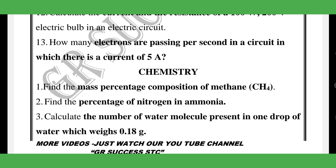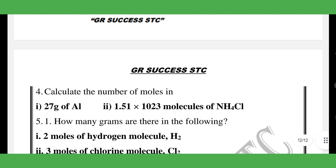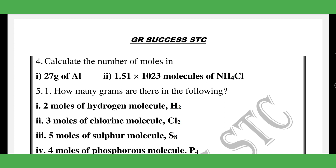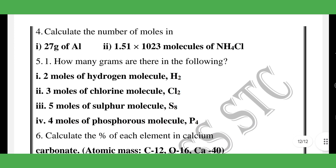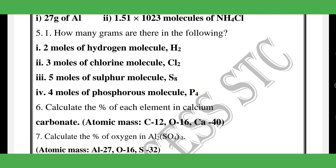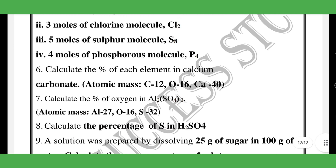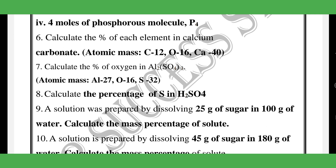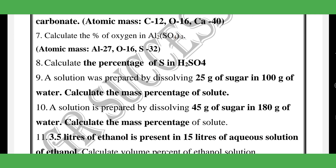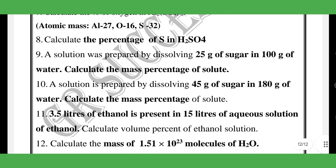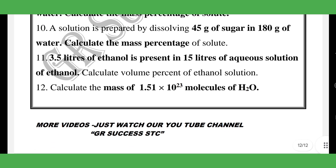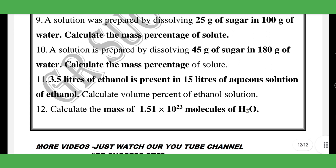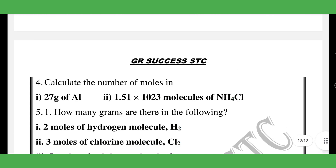Chemistry numericals: mass percentage, moles of ammonium compounds. How many grams are: 2 moles of hydrogen molecule H₂, 3 moles of chlorine molecule Cl₂, 5 moles of sulfur molecule S, 4 moles of phosphorus molecule P₄. Calculate percentage of elements in calcium carbonate, percentage of sulphur in sulphuric acid. Mass percent of solute — PTA and previous public exam questions. Calculate the volume of a solution, mass of H₂, and mass percentage of water — 12 chemistry numericals total.